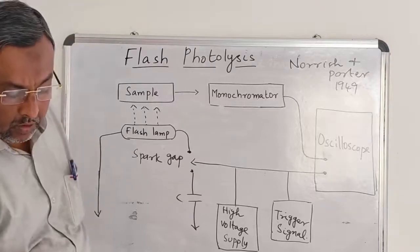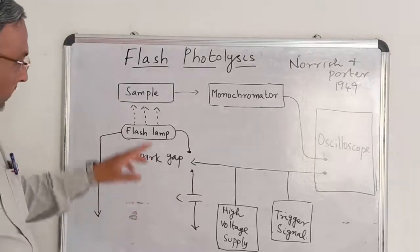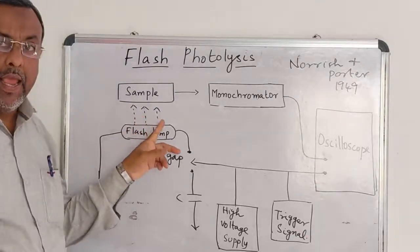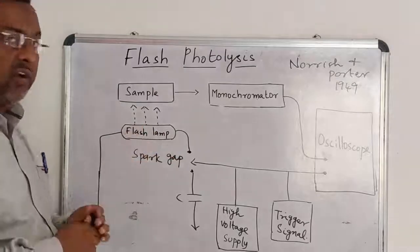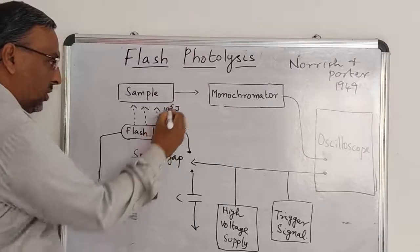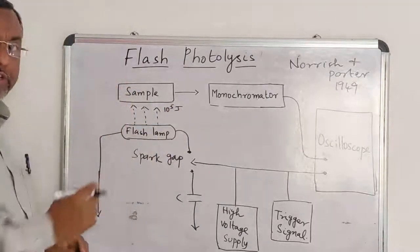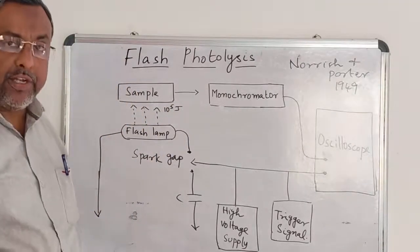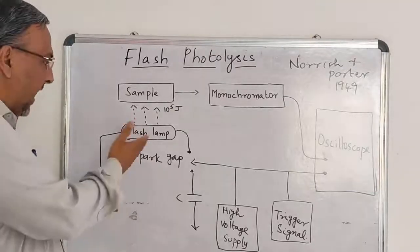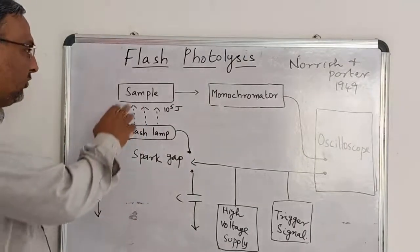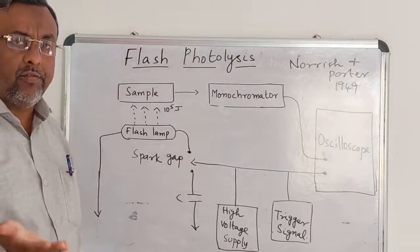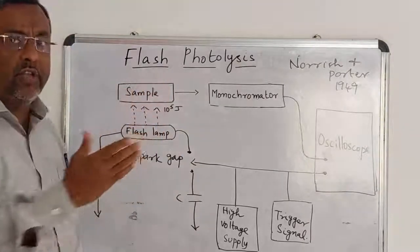In this method, the sample is subjected to a powerful flash having the energy of about 10 to the power of 5 joules. It passes through the substance for about 10 microseconds, and the flash is so intense that almost all the reactants go to the excited stage or it is converted into free radicals.